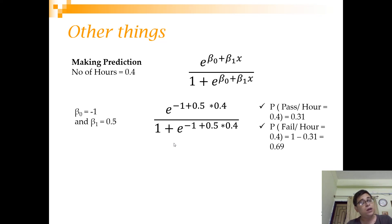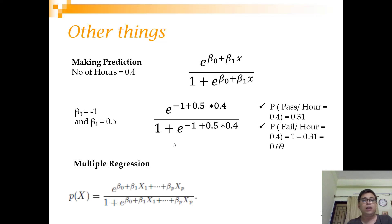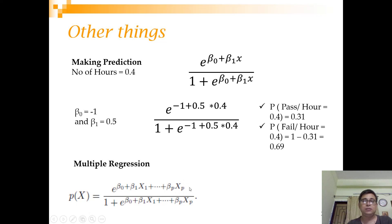To extend this to multiple predictors, you simply expand the equation to beta 0 plus beta 1 x1 plus beta 2 x2 up to beta p times xp for p predictors. This is called multiple logistic regression.